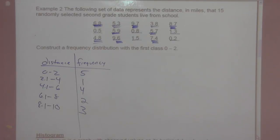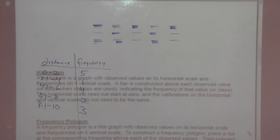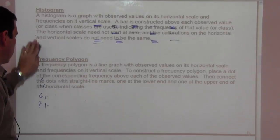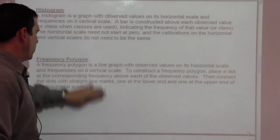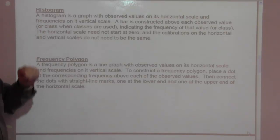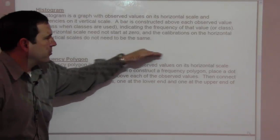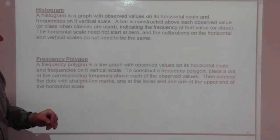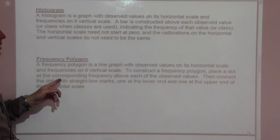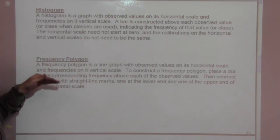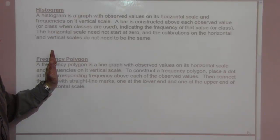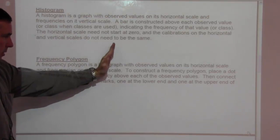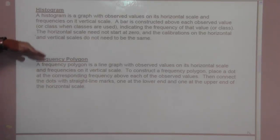I'm going to go ahead and scroll this up, so feel free to pause that if you need to. Histogram. A histogram is a graph with observed values on its horizontal scale, so observed values down here, and frequencies on its vertical scale. A bar is constructed above each observed value or class when classes are used, indicating the frequency of that value or class. The horizontal scale need not start at zero, and the calibration of the horizontal scale and vertical scales do not need to be the same. So if you go like zero to five, six to ten, and so on on the horizontal scale, the vertical scale can still go one, two, three, four, five.